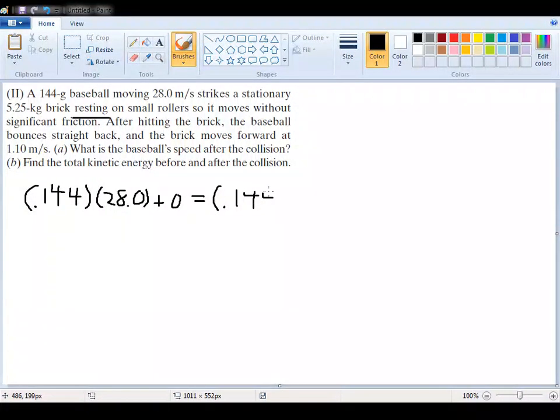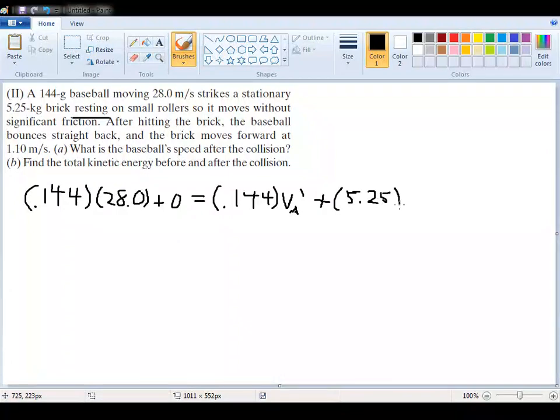So it's asking about speed after the collision. What we're looking for here is the final a value, which I'm going to write as va prime, and the mass of the brick is 5.25, so I'm going to take that there and finish off writing this whole formula.